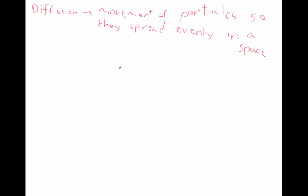So what does this mean in practice? A good example is if we think about a bottle of perfume. Let's draw a little bottle here. So this has perfume in it, and let's pretend there is a cork or some kind of plug in it. Now within this bottle, underneath the cork, there are all these molecules bouncing around, colliding with each other, and they evenly fill this space.